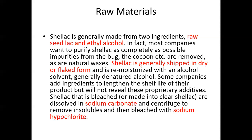Shellac is generally made from two ingredients: raw seedlac and ethyl alcohol. It is basically a combination of these two — raw seedlac coming from the female lac bug (Ameloregium), and ethyl alcohol. Most companies want to purify shellac as completely as possible, removing impurities from the bug, the cocoon, and other natural mixes present in the raw material.